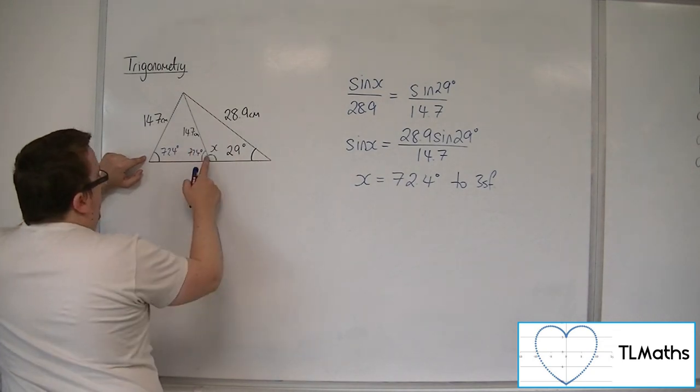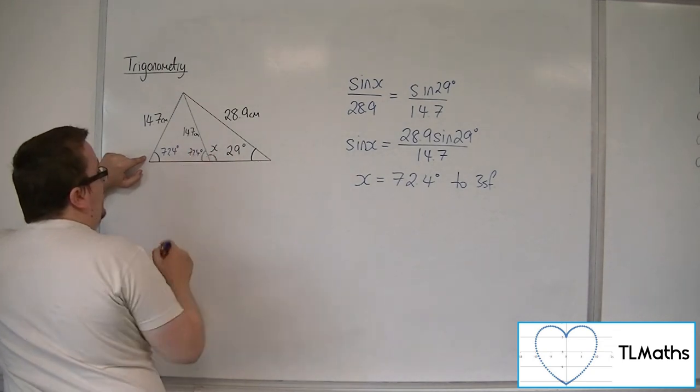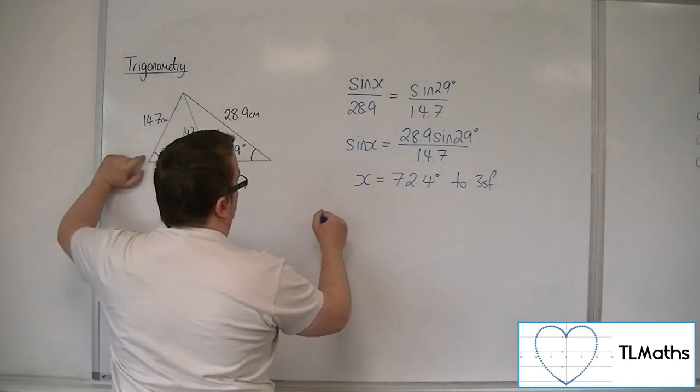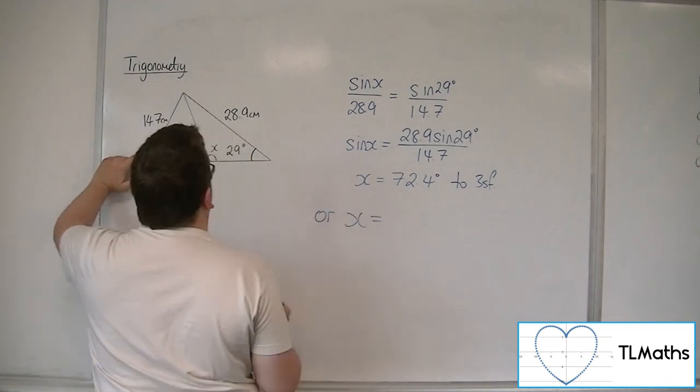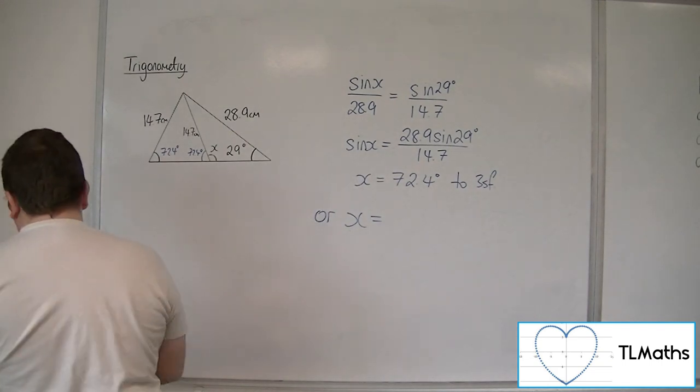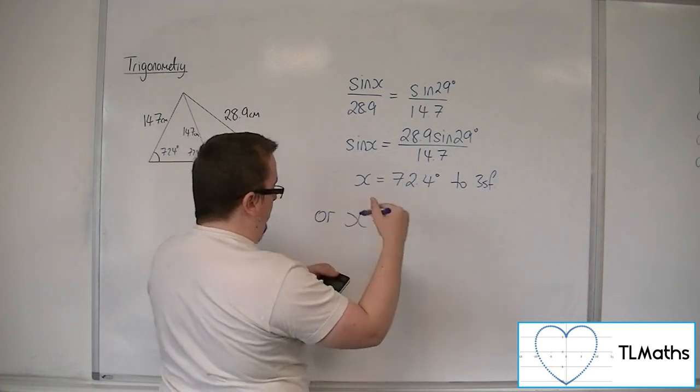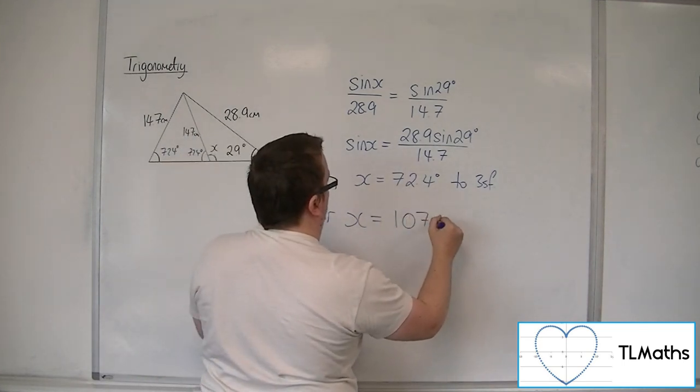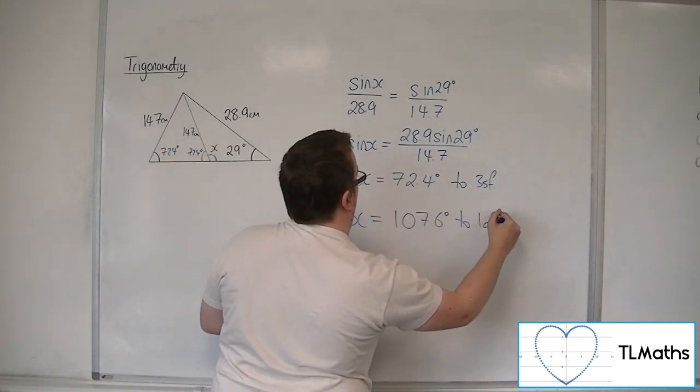And so, if that's 72.4, I can work out this other angle by subtracting it from 180 degrees, which is 107.6 degrees to one decimal place.